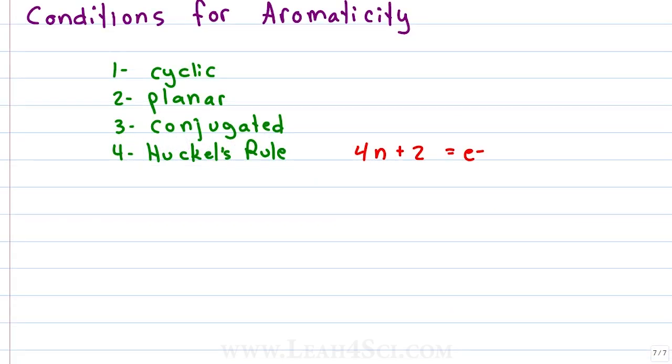In the previous videos, we looked at the conditions for aromaticity and determined that for a molecule to be aromatic, it has to be cyclic, planar, conjugated and obey Huckel's rule with a shortcut that we've identified as 4n plus 2 equals pi electrons means they need to have an odd number of electron pairs.